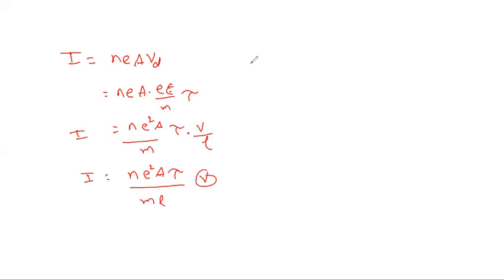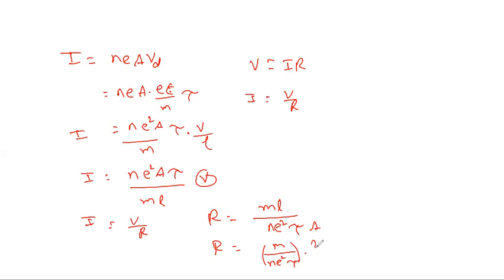V is equal to IR. I is equal to V by R. R is equal to ML by N E squared tau A, which is M by N E squared tau, times L by A.